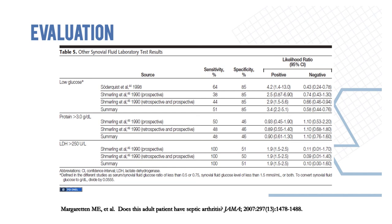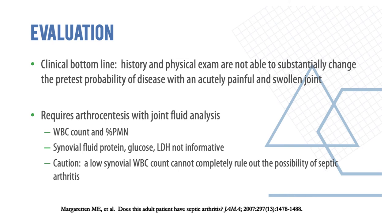Other joint fluid findings include low glucose, high protein, and high LDH. However, history and physical examination alone cannot substantially change the probability of disease in an acute painful swollen joint — all arthritides can present similarly. The only extra feature in septic arthritis is fever. The definitive diagnosis is clinched by joint fluid aspirate; always look for bacteria, crystals, white blood cell count, and percentage of polymorphonuclear cells.